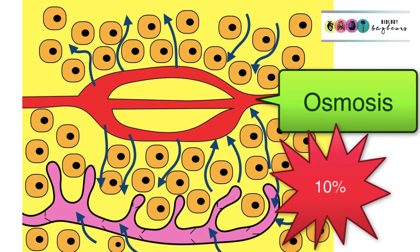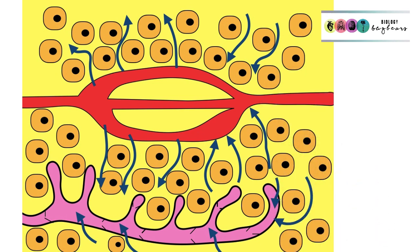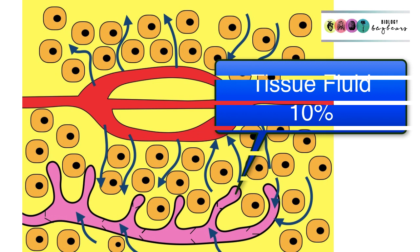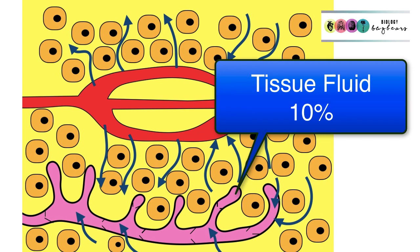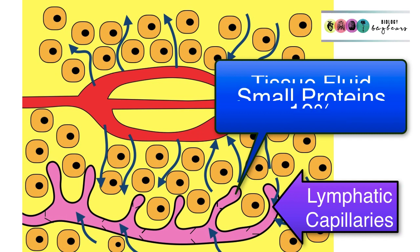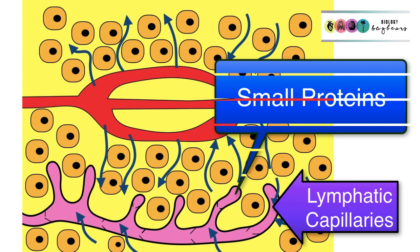There is 10% of the tissue fluid that does not return to the blood, and this is why the lymphatic system is really important — it returns that 10%. That 10% tissue fluid enters the lymphatic system through little blind-ending vessels known as lymphatic capillaries. The small proteins also follow and enter the lymphatic capillaries.